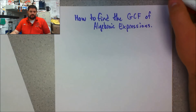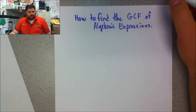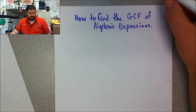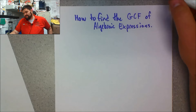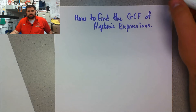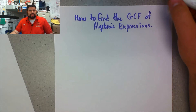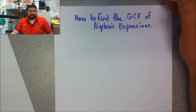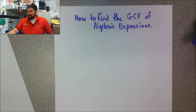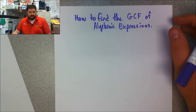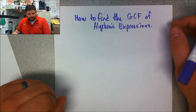Now I want to talk about finding the GCF of algebraic expressions — these are things that have a variable tied to them. We need to be able to find the algebraic GCF in order to add algebraic expressions together, solve for x and y, and so on. It's really good practice and is used a lot at higher levels of algebra. So I'd like to take a look at two examples today.